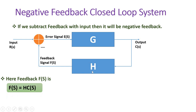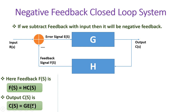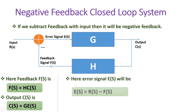So F(S) equals H into C(S). For system G, the input is the error signal E(S) and the output is C(S). Therefore C(S) equals G into E(S). The error detector output E(S) has a negative sign, meaning E(S) equals the input R(S) minus the feedback signal F(S). So E(S) equals R(S) minus F(S).